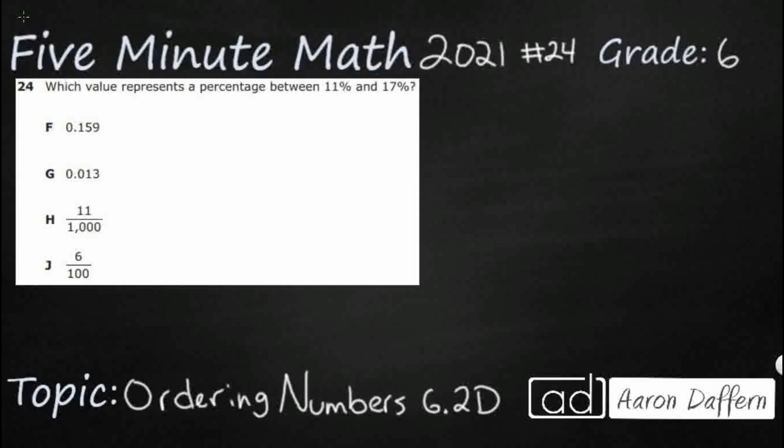Hello, and welcome to 5-Minute Math. Today we are looking at the 6th grade concept of ordering numbers. This is standard 6.2D in the great state of Texas, and we are using item number 24 of the 2021 released STAAR test.